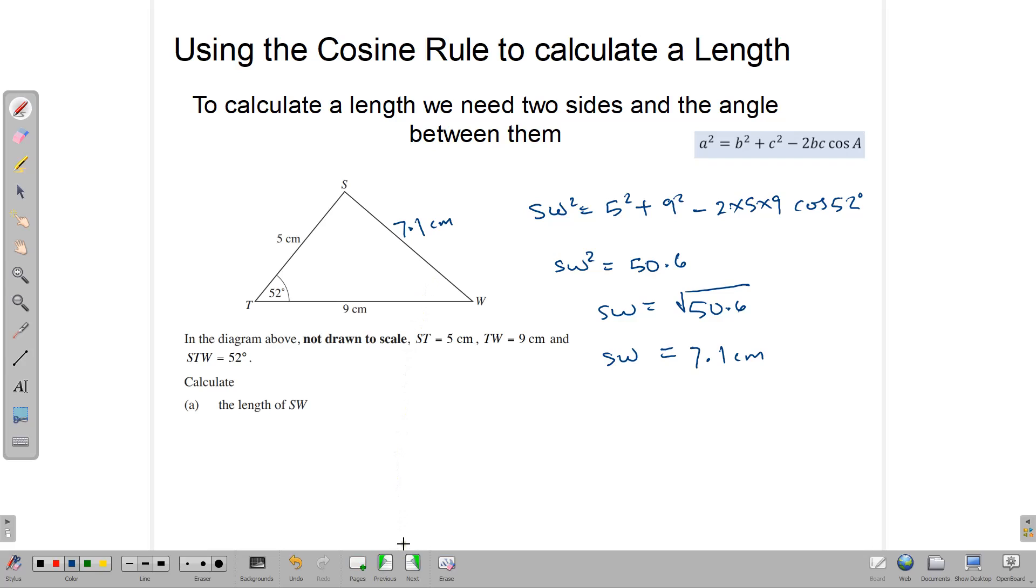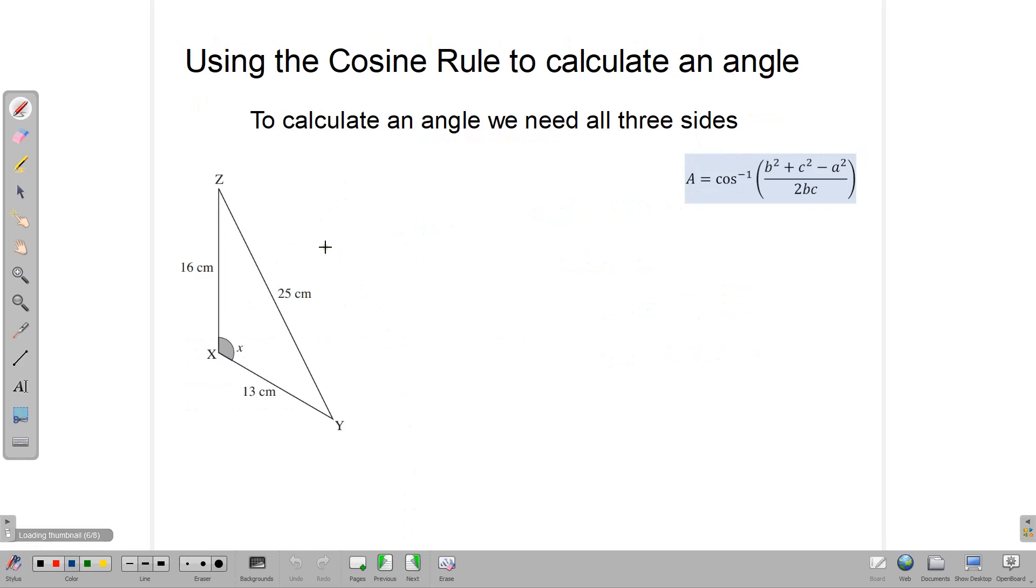Now let's see how we can use it to calculate the size of an angle. Here we have a triangle XYZ, and we want to find the size of angle X. We can write the formula in the same way: a squared is equal to b squared plus c squared minus 2bc cos A. So 25 squared, since this is opposite to that, is equal to 16 squared plus 13 squared minus 2 times 16 times 13 cosine of angle X.